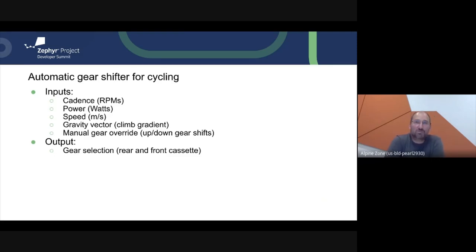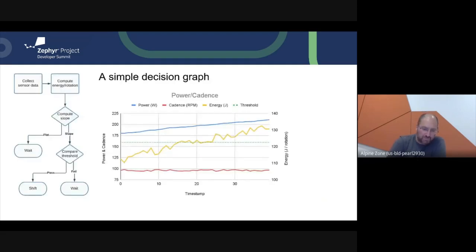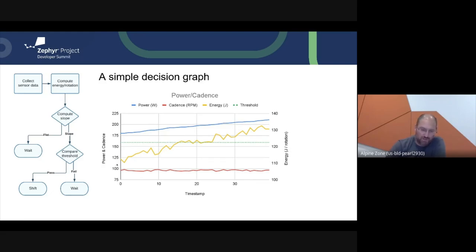The inputs are a bunch of sensors on the bicycle: we can measure cadence, power, speed, gravity vector, and whether or not the user overrode our decision. The output is the gear selection — we have a rear and a front cassette. We're going to start with a much simpler algorithm. We take the user's cadence, which fluctuates just under 100 RPM in this case, and the amount of power they're outputting. We can effectively divide them to get energy per rotation of the pedal by taking power divided by cadence. We're going to set a simple threshold at around 160 joules per rotation, and if we cross that threshold, we need to shift down.